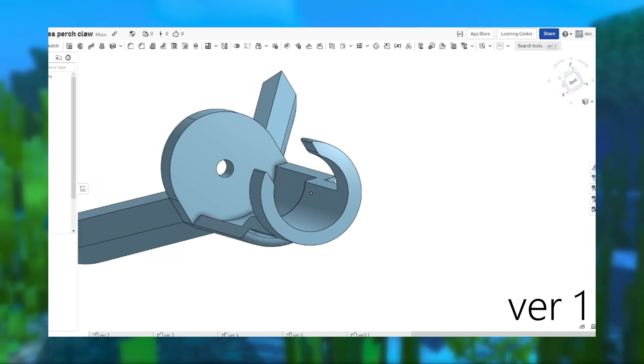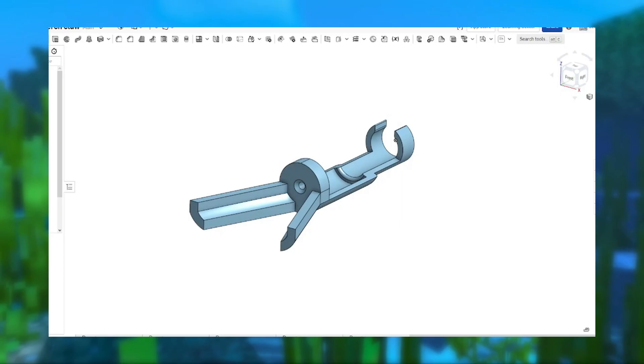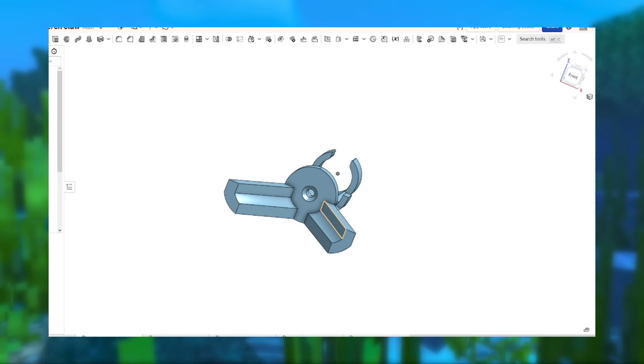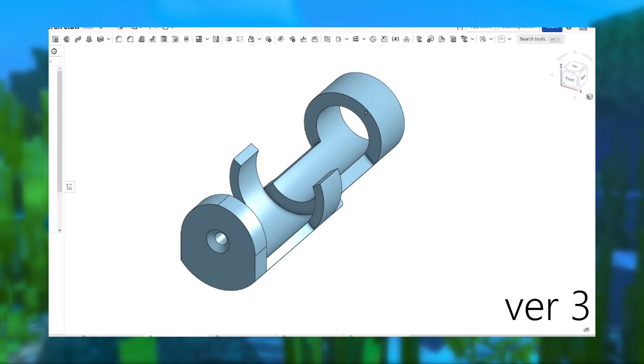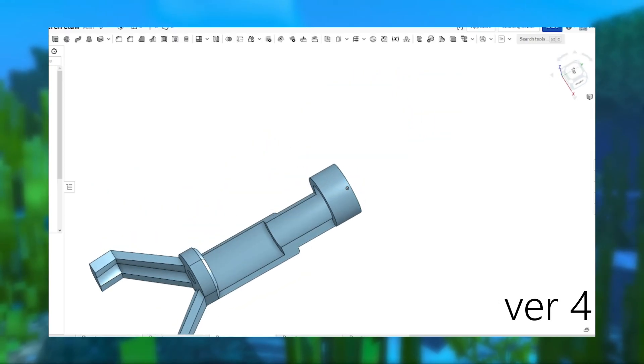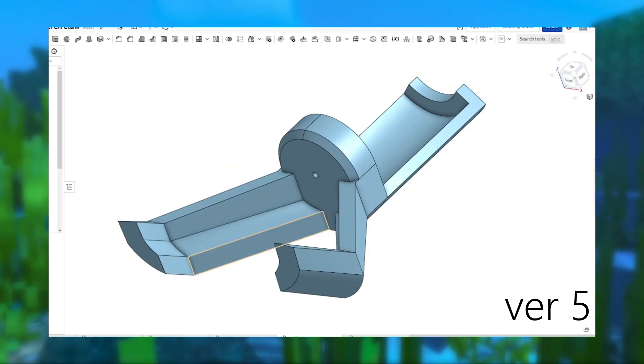Unfortunately, the clamp in the back fractures really easily. Over several weeks, we came up with five different iterations. Here's version 2. Here's version 3. Here's version 4. And here's version 5. As well as a 5.1.